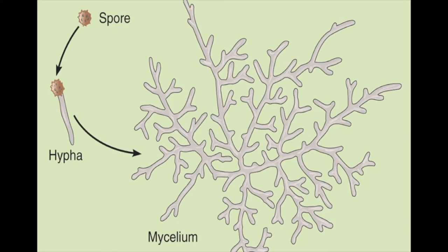An individual spore creates an individual thread called a hypha, and then many hyphae intertwined together is called mycelium. So if you ever ripped apart a mushroom, you have many threads of that mushroom — that's called mycelia or mycelium.